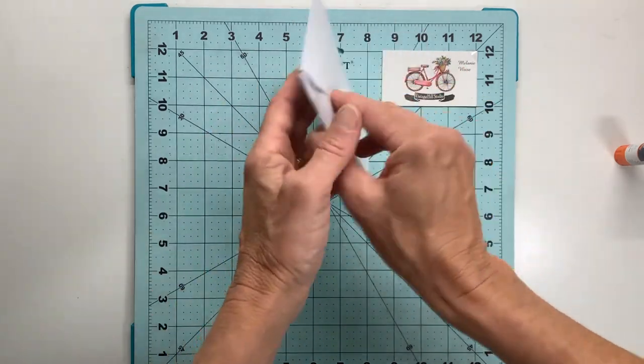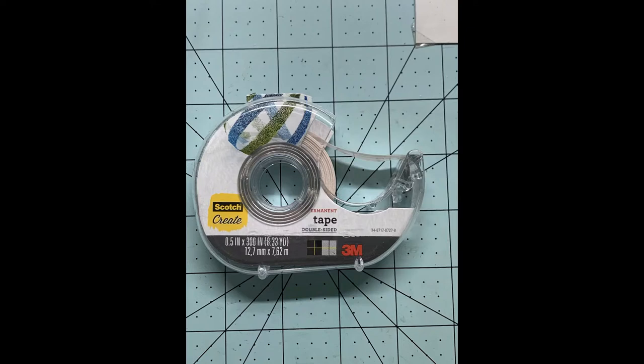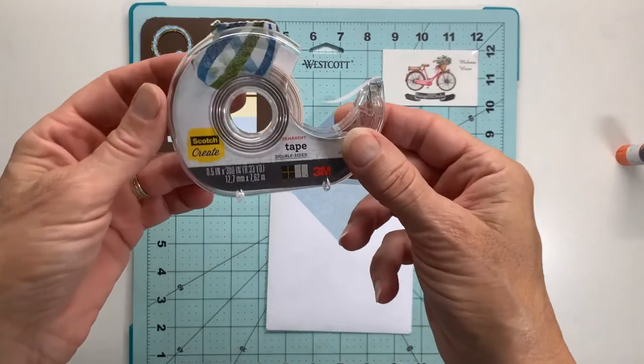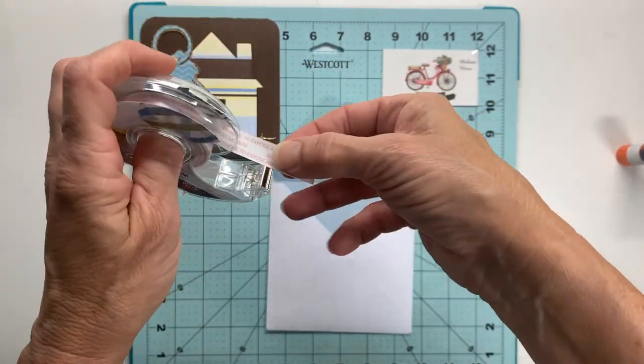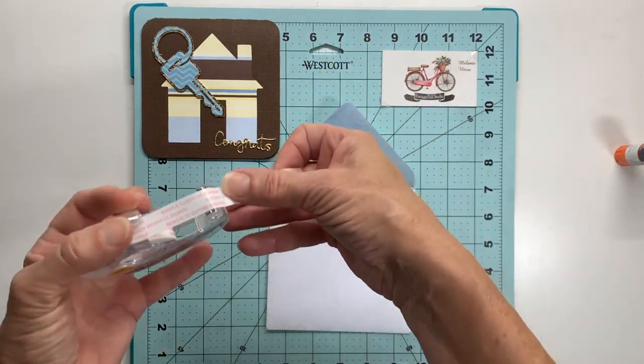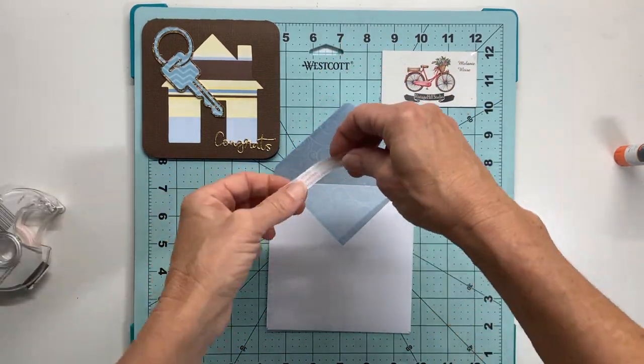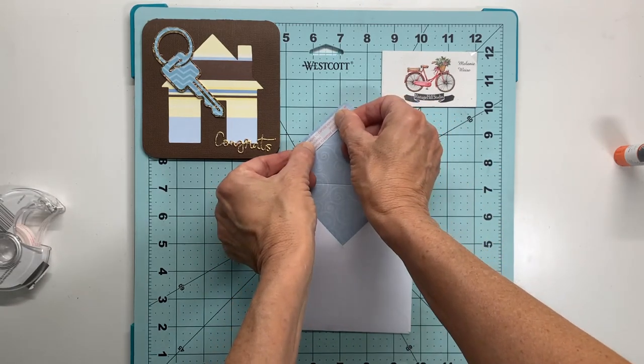So the last thing I want to do is add something for my flap. And I chose this Scotch Create tape, which is a permanent double sided tape. And I'm going to use that for the last flap so that when I'm ready to mail my card, all I have to do is peel back that release paper and my double sided tape will seal my envelope.